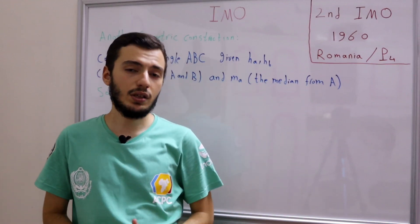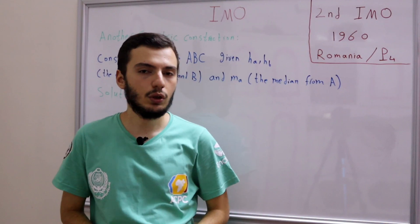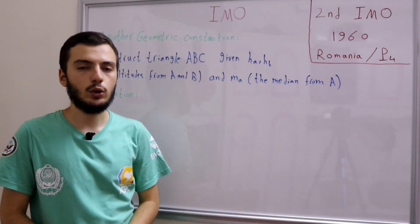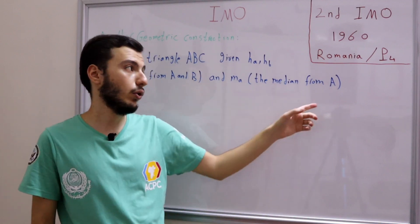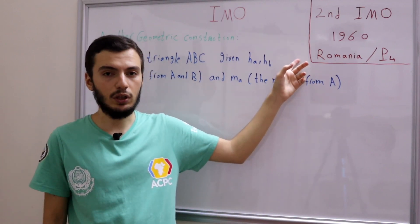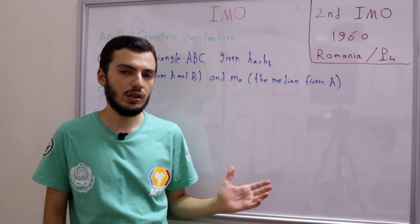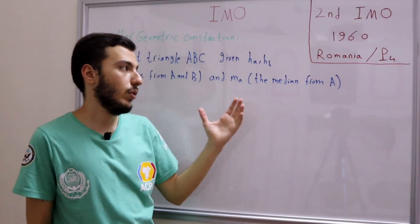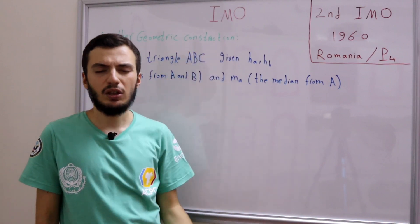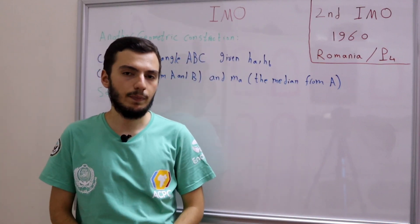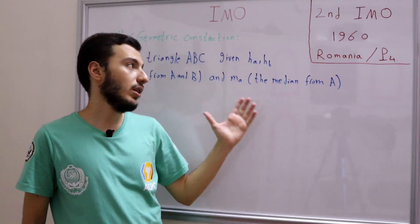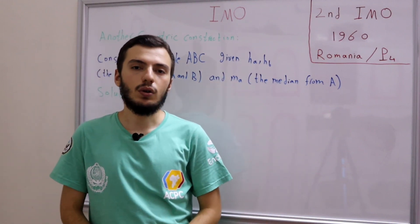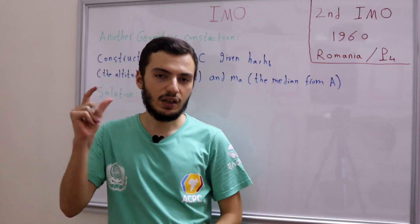This type of question is familiar because it is a geometric construction. We've seen this type before in problem 4 of the first IMO. In the old IMOs there were lots of geometric constructions, but not anymore in the new IMOs. However, this type of question is really nice as we will see in this video. So let's get started.